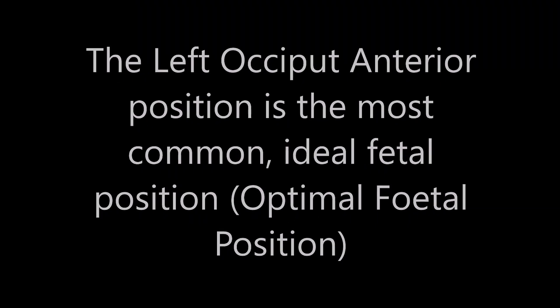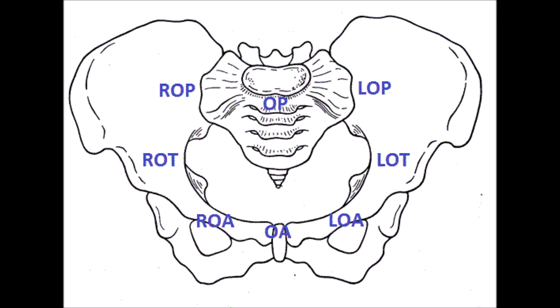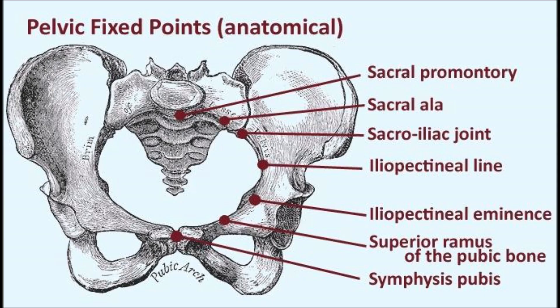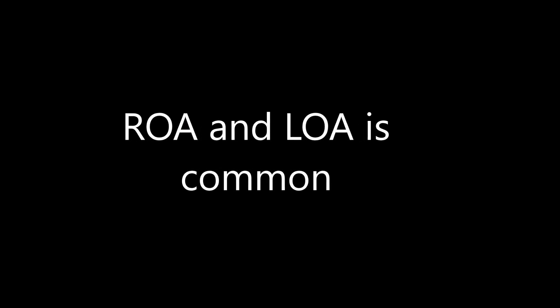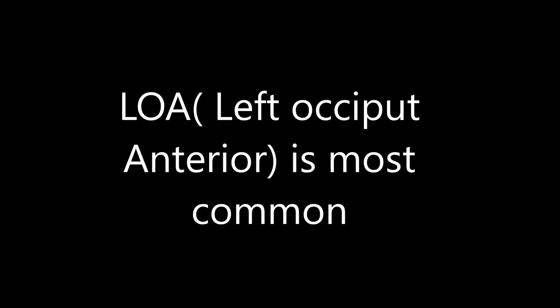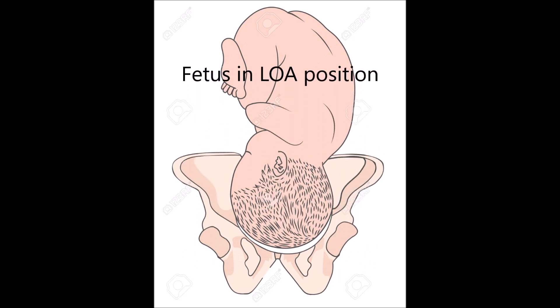The denominator is the occiput. With the outer fixed point on the left side, the occiput relates to the iliopectineal eminence. The common position is ROA — Right Occiput Anterior Position — where the occiput is at the right-side iliopectineal eminence. In normal mechanism, both ROA and LOA (Left Occiput Anterior) are common positions.